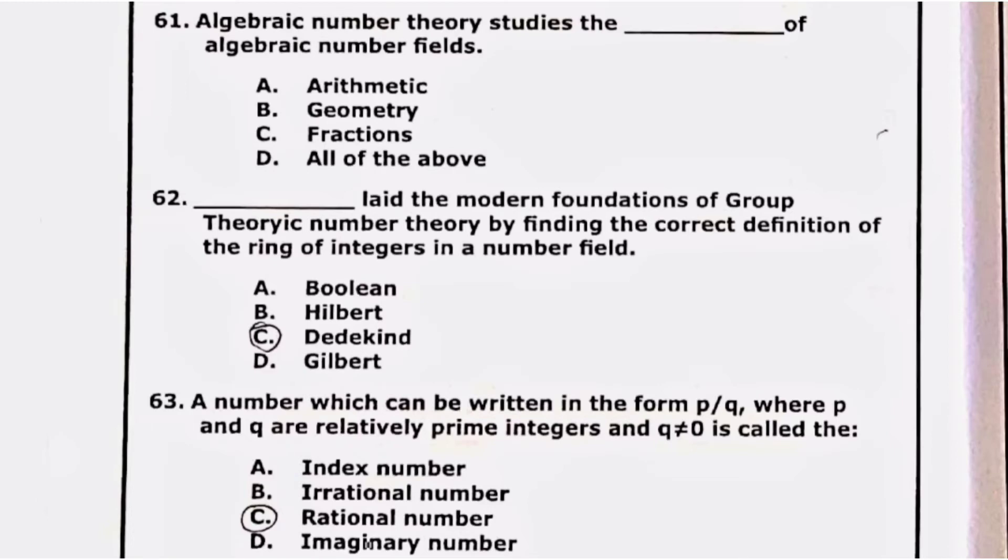61: algebraic number theory studies the blank of algebraic number fields. When I checked then I found all three options are satisfying, but if someone has a better answer you people can share. Otherwise option D is correct.